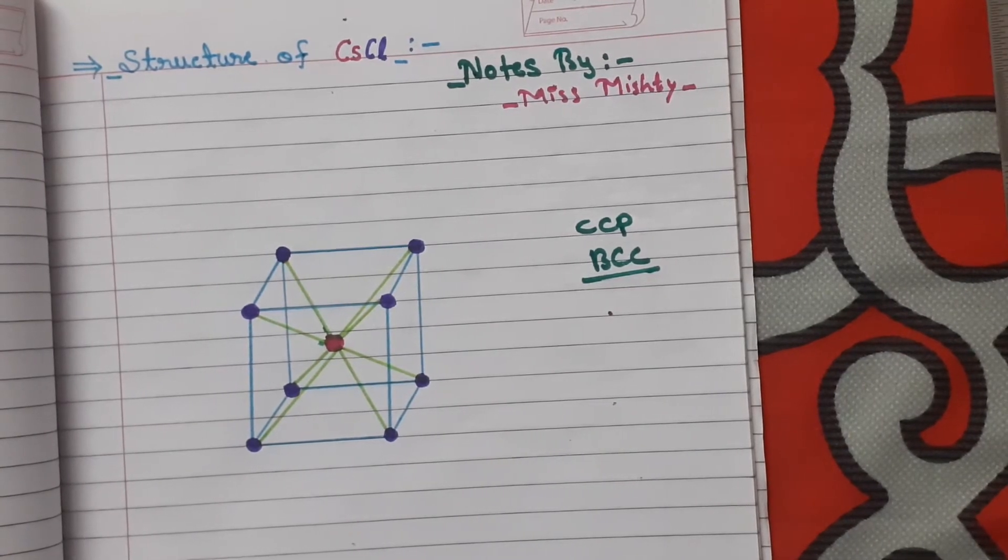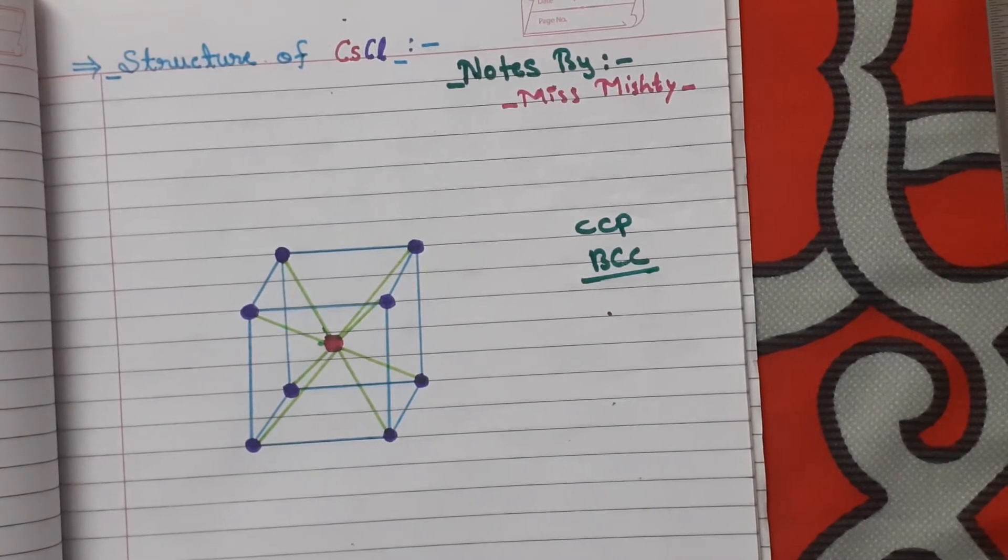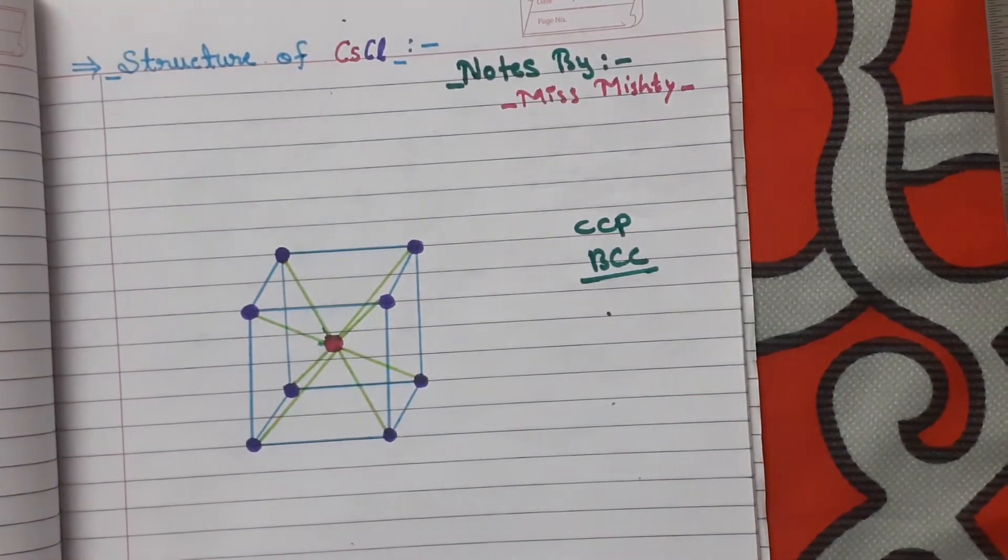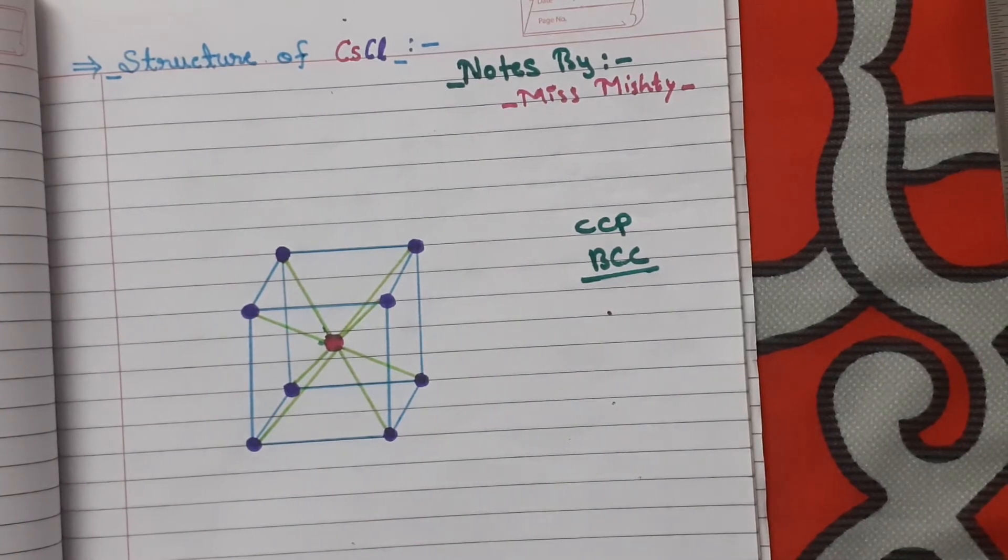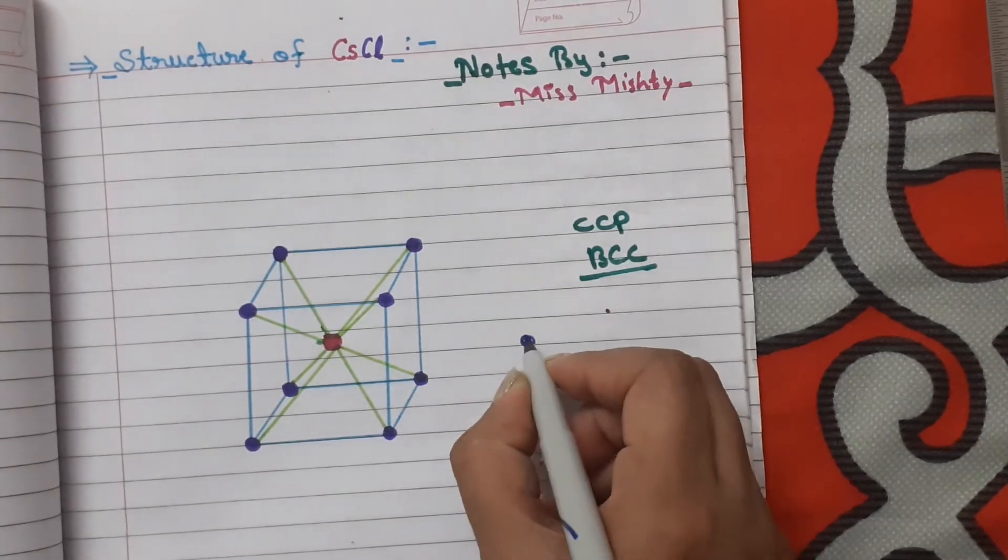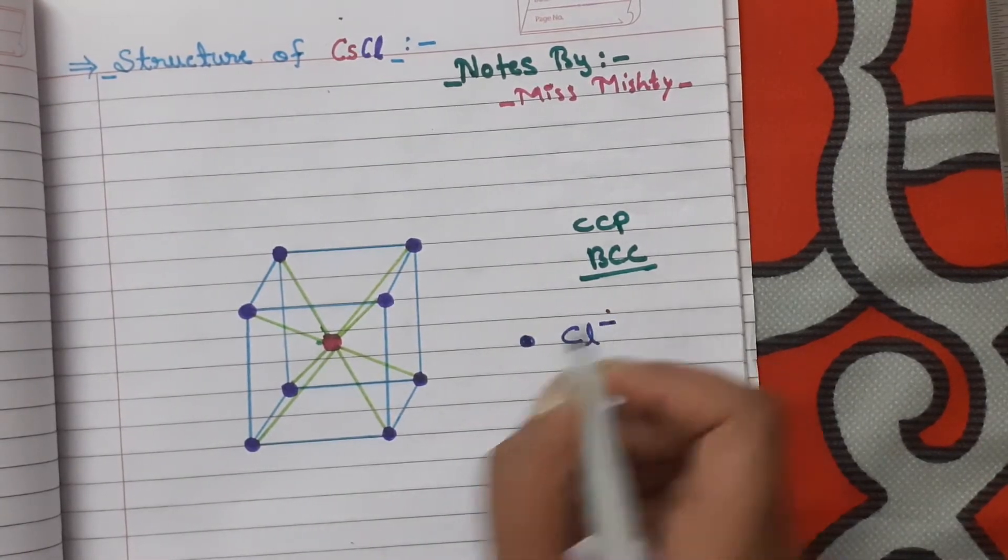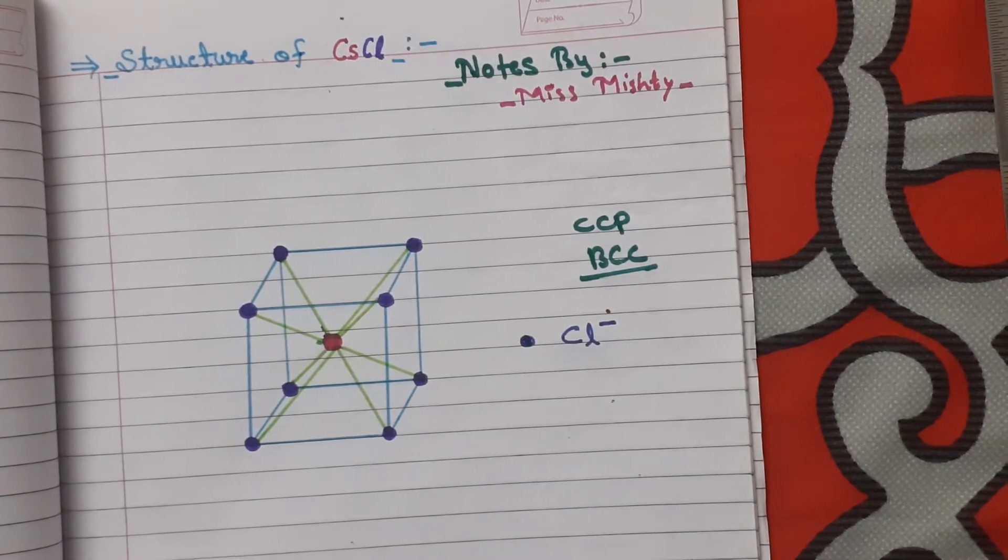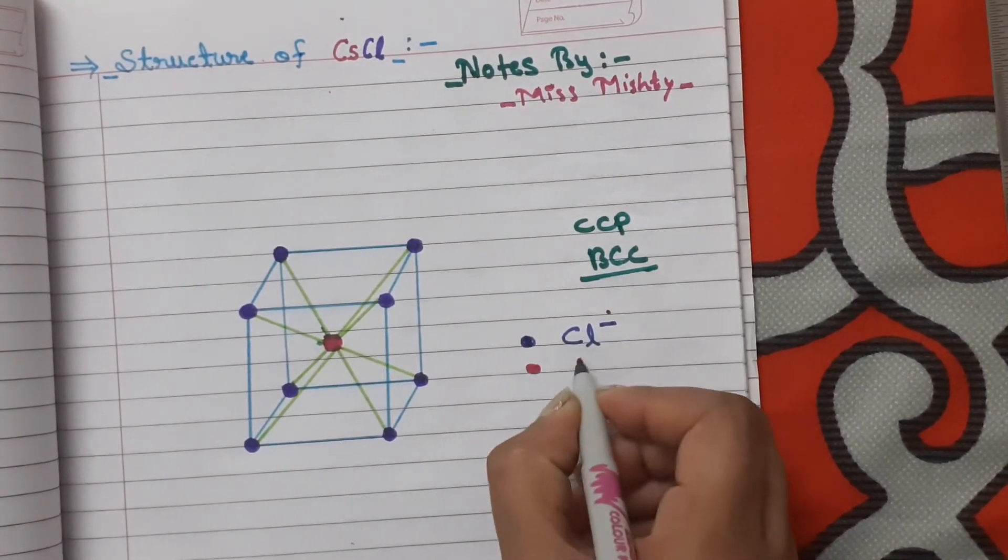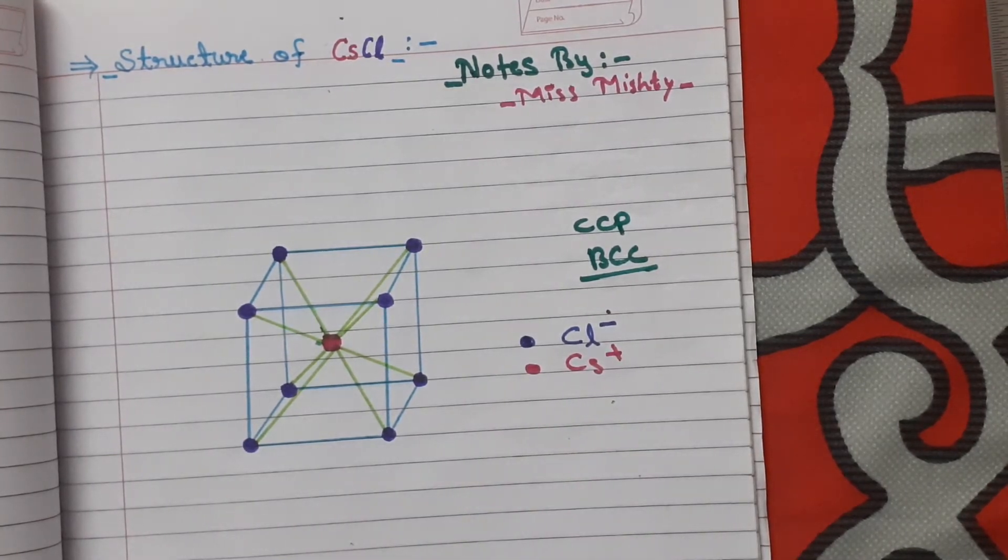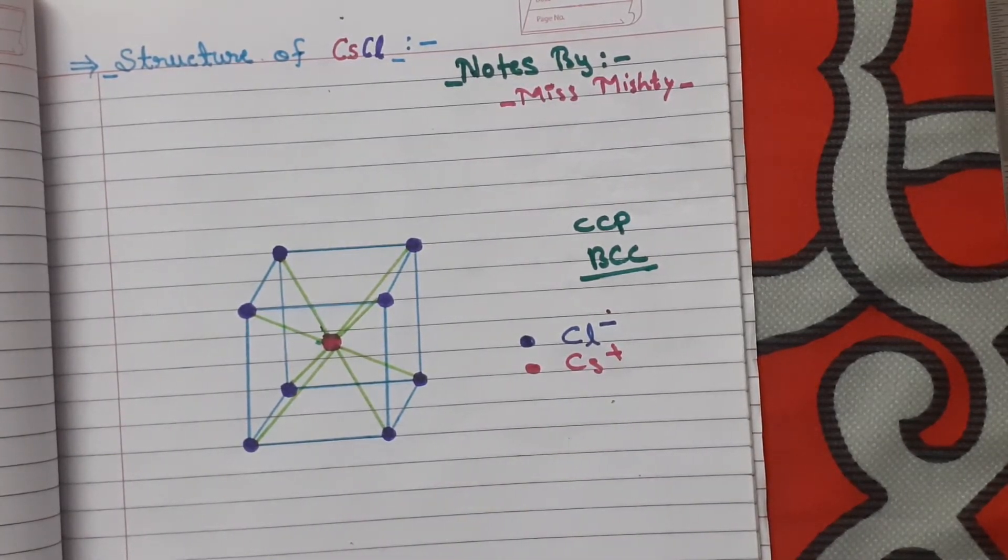Chlorine ion will occupy the corners. So we can say that the blue balls here are chlorine anions and the pink ball here is cesium cation.